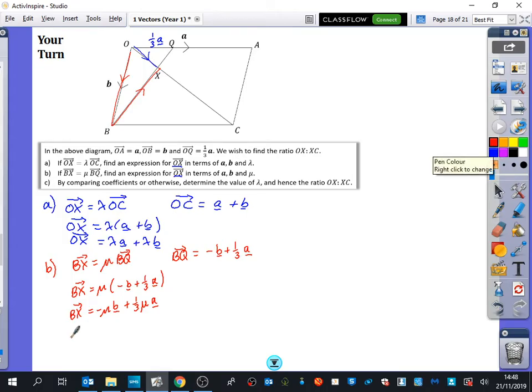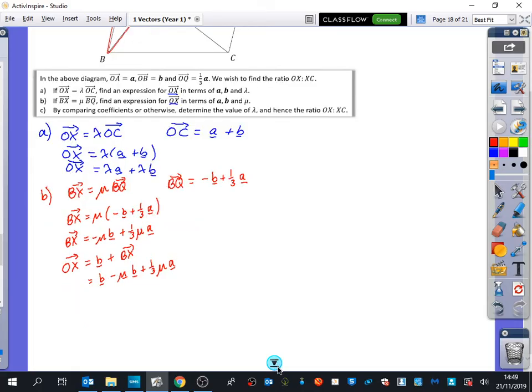That's going to help me find out what OX is. Because OX on the red journey is B plus BX. So it is B plus BX. And we've worked out what BX is here. So that's B minus mu B plus one third mu A. Let's just come down a little bit more here.